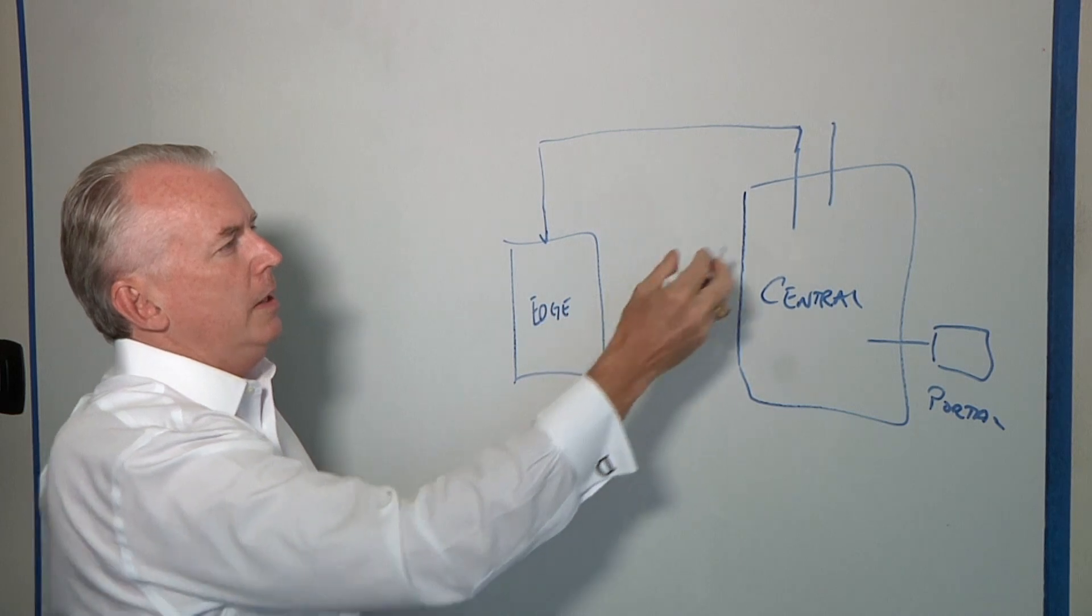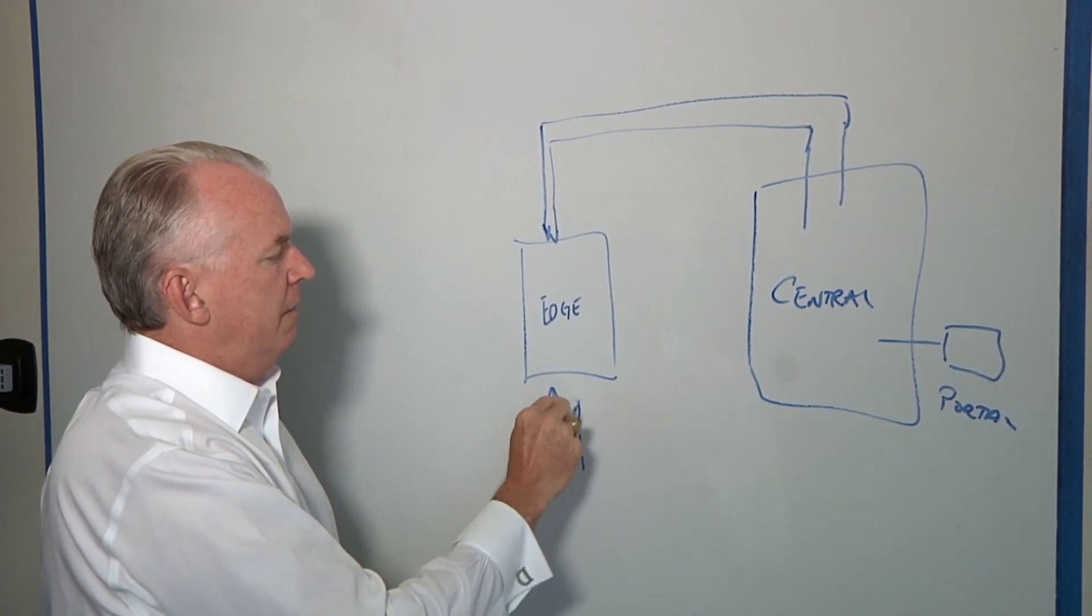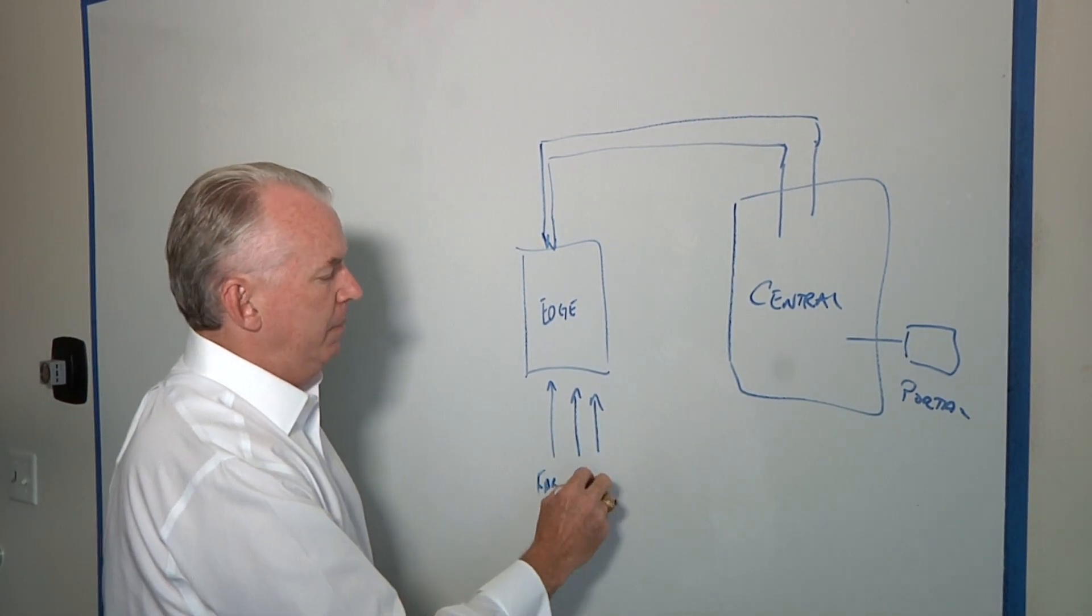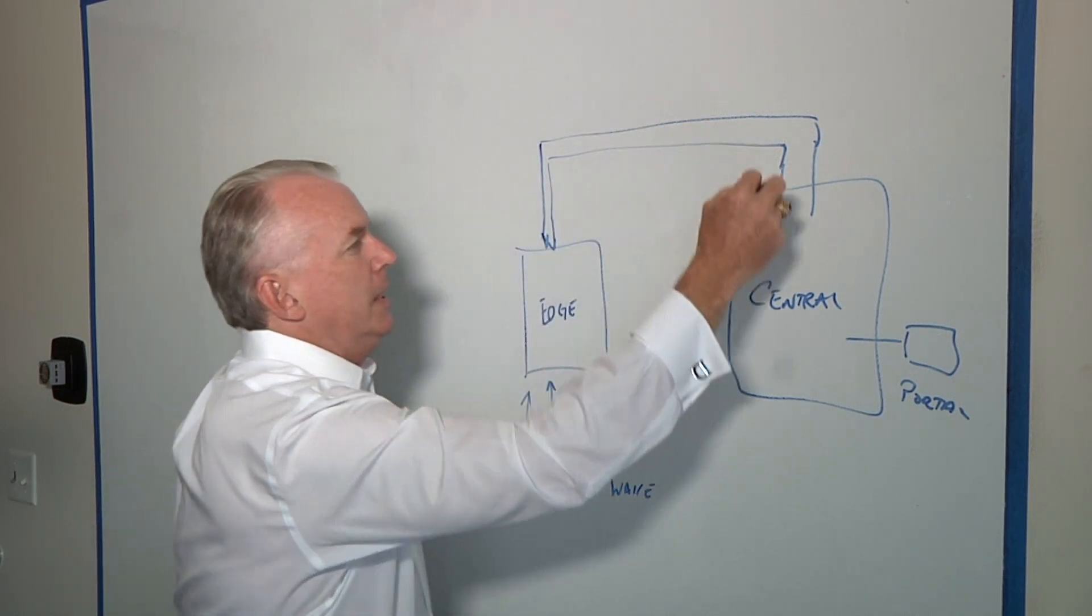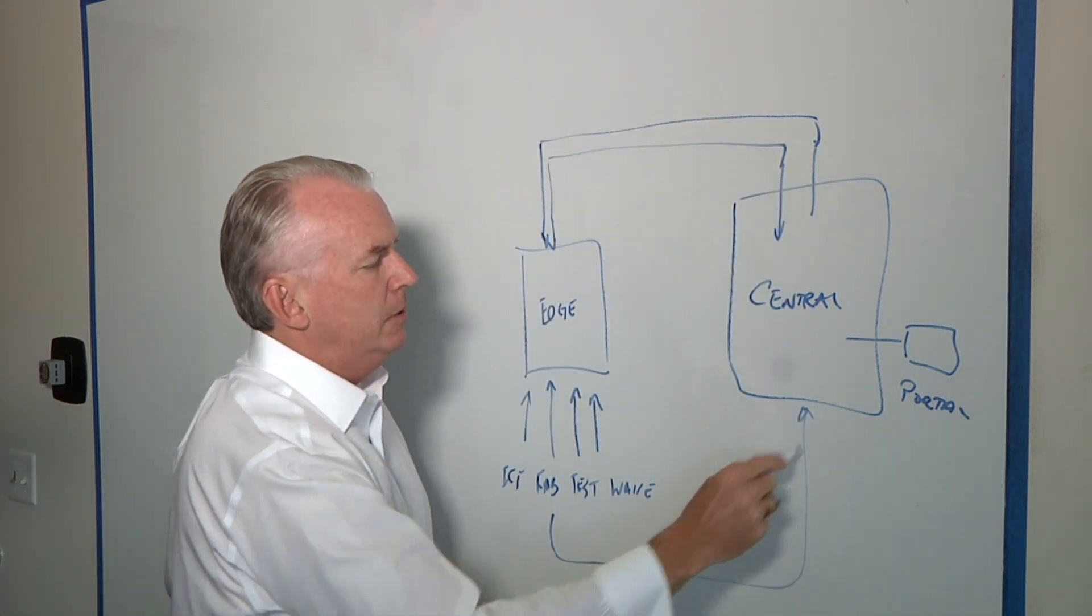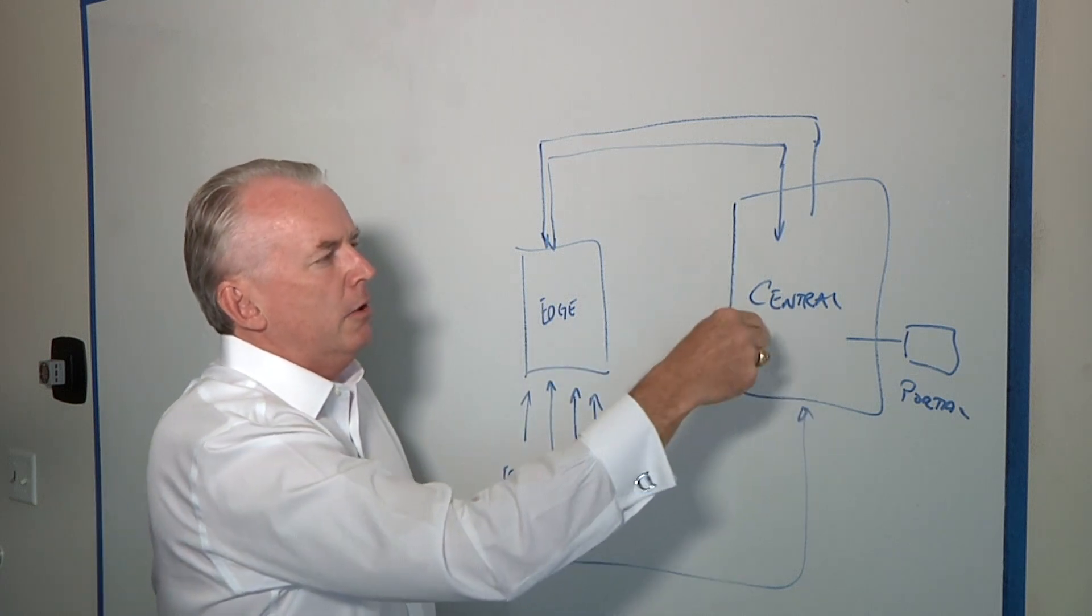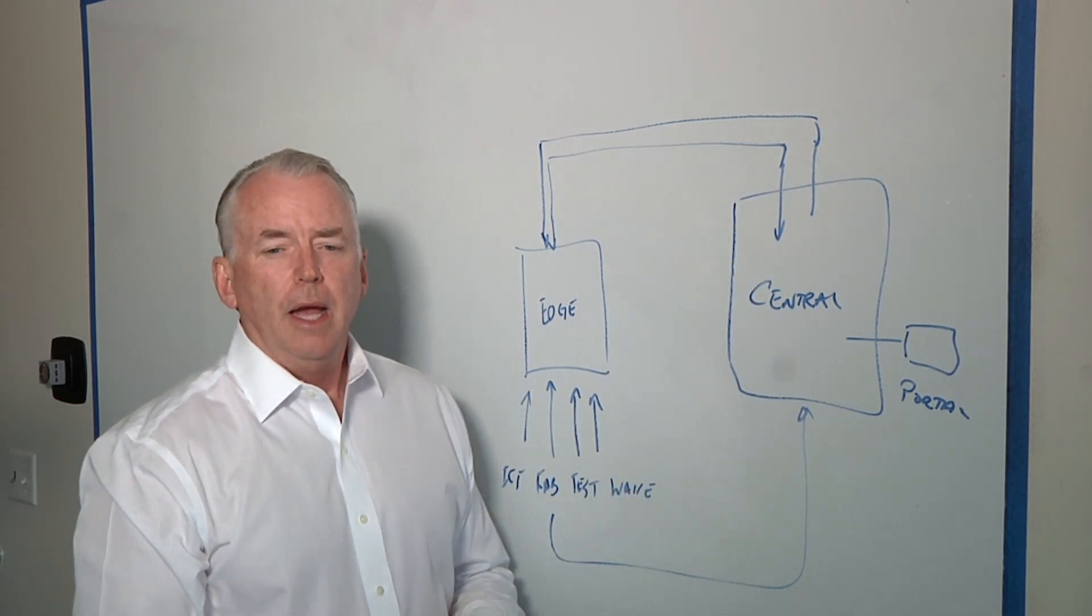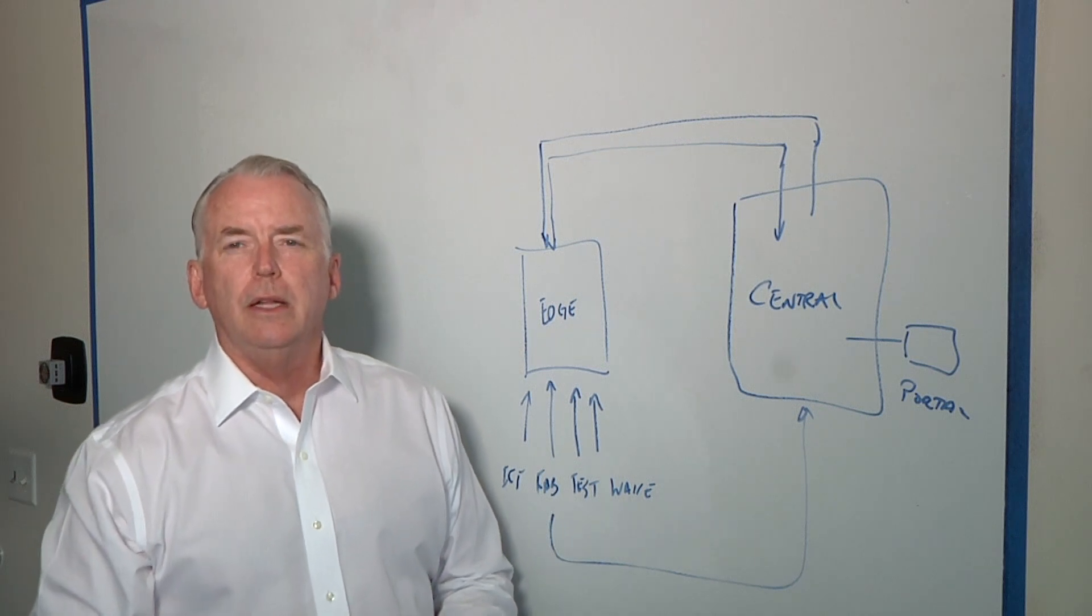And that edge where we're running or we're creating these rules that we're pumping in through the edge allows us to then take those rules, collect the data off of whatever the equipment is, whether it's a fab piece of equipment or it's a tester or in some cases it might be a wave solder machine or ICT or whatever it might be. And we're collecting that data and then we're sending it back to the central location and we're interpreting that and maybe creating a new rule that we pump back through the system.